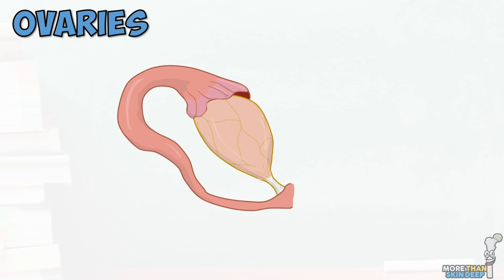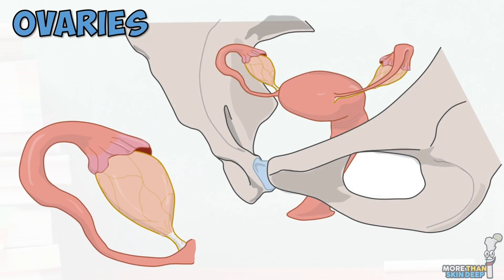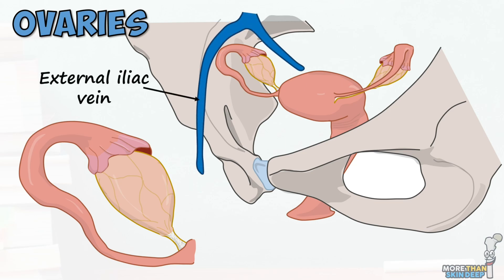The ovaries are roughly the size of a golf ball in a young adult and lie either side of the uterus, just below the opening of the fallopian tubes, in a region referred to as the ovarian fossa, where the external iliac vein sits anteriorly and the internal iliac vein posteriorly.